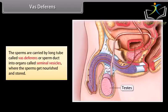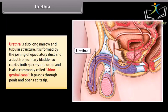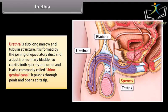The sperms are carried by a long tube called vas deferens or sperm duct into organs called seminal vesicles, where the sperms get nourished and stored. The urethra is a long, narrow and tubular structure formed by the joining of the ejaculatory duct and duct from the urinary bladder, so it carries both sperms and urine. It is commonly called the urinogenital canal and passes through the penis, opening at its tip.